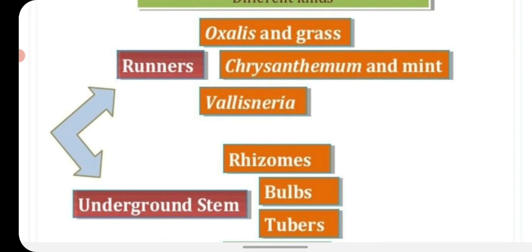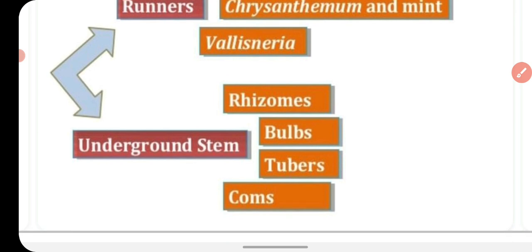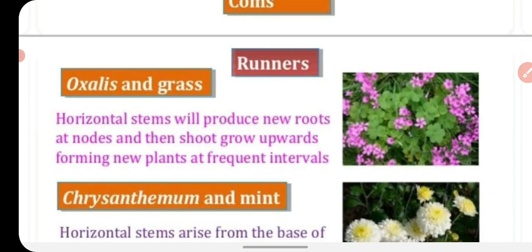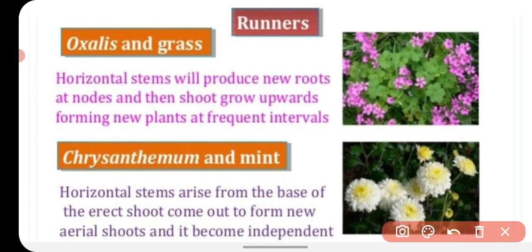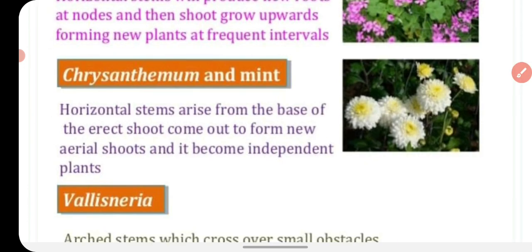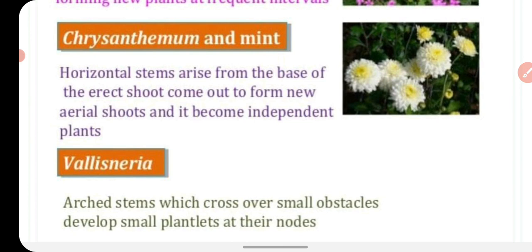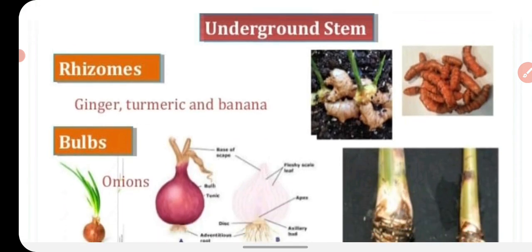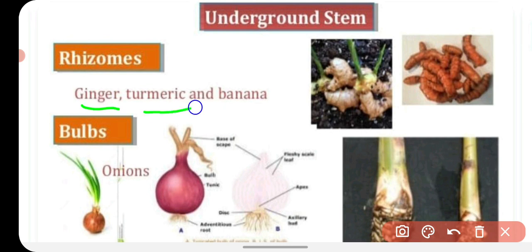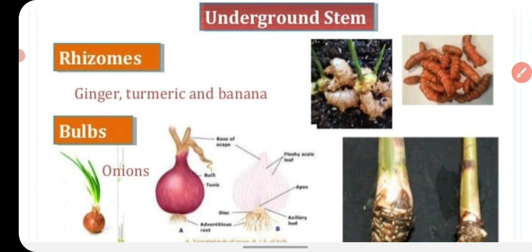There are many modified stems like rhizome, bulb, tuber, and corm. A horizontal stem with roots and shoots can be seen in some plants. Examples of rhizomes include turmeric and banana — these are underground stems. We call this type of underground stem a rhizome.